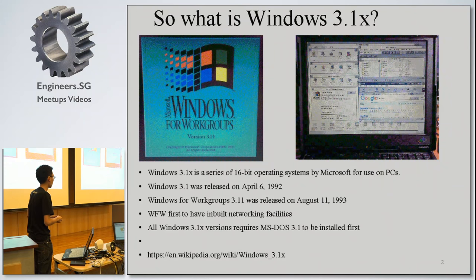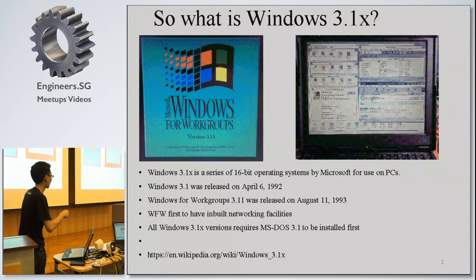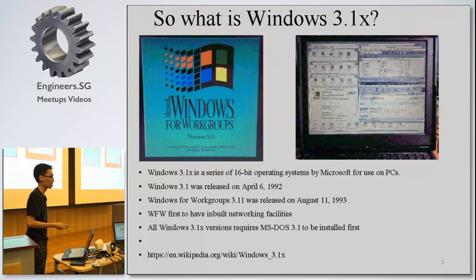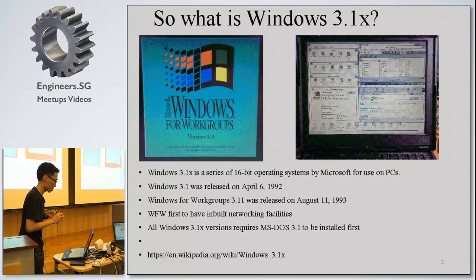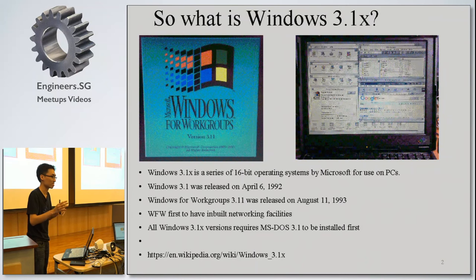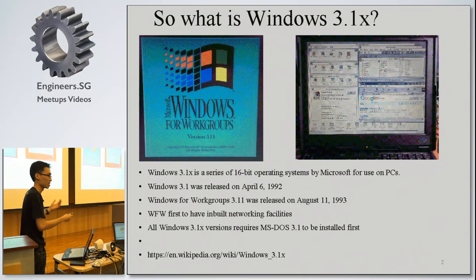The next one, Windows 95, is 32-bit. The first version was actually released in 1992. The one I'm running now is called Windows for Workgroups, released in 1993. The difference between these two can be thought of like Windows 10 Home versus Windows 10 Professional — this Workgroups version is meant for business use.